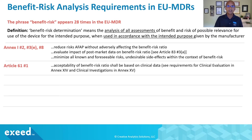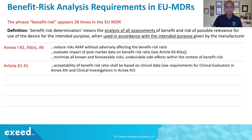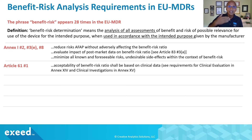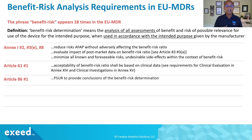Article 61 specifically requires the acceptability of the benefit-risk ratio to be based on clinical data — not conjecture, not hypothesis, not speculation, but actual data. That's why you should look up requirements for clinical evaluation in Annex 14 and clinical investigations in Annex 15, to be able to plan how you will gather this information.